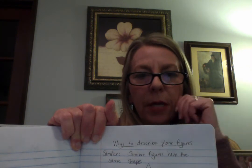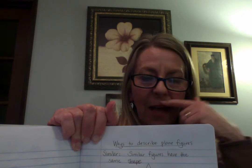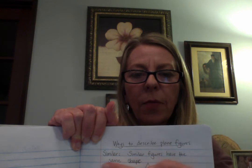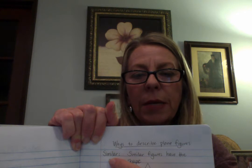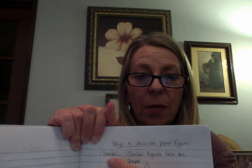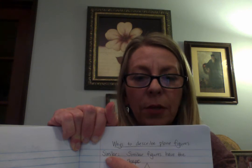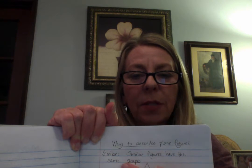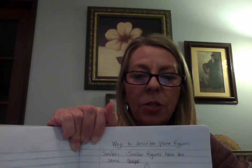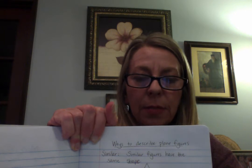There are three ways we're going to be learning about today that we can describe plain figures. Remember, a plain figure just means a flat shape. The first way we can describe is that plain figures could be similar. This is like when we were talking about compare and contrast — finding similarities. Similar figures have the same shape, so underline the word 'shape.' That's the key to remember with similar.